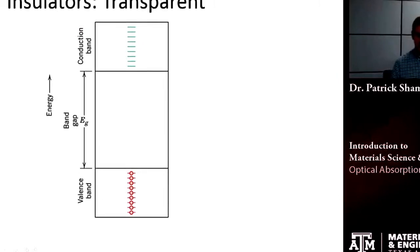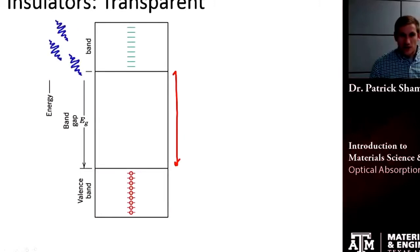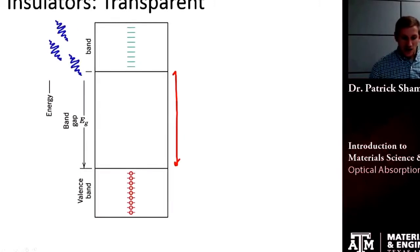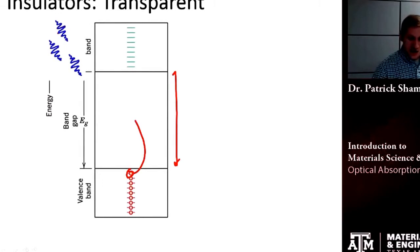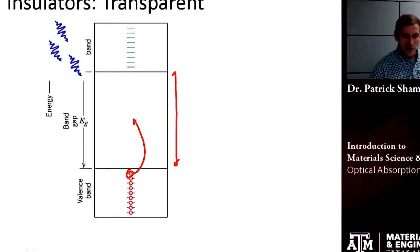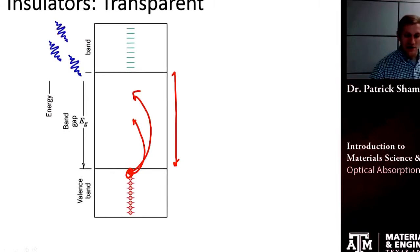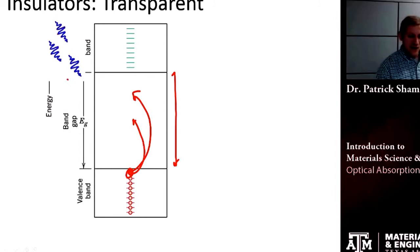Now let's think about insulators. Insulators tend to have a very wide band gap. So when that photon comes in, in most cases that photon has some specific energy and it doesn't have enough energy to excite an electron across that band gap.